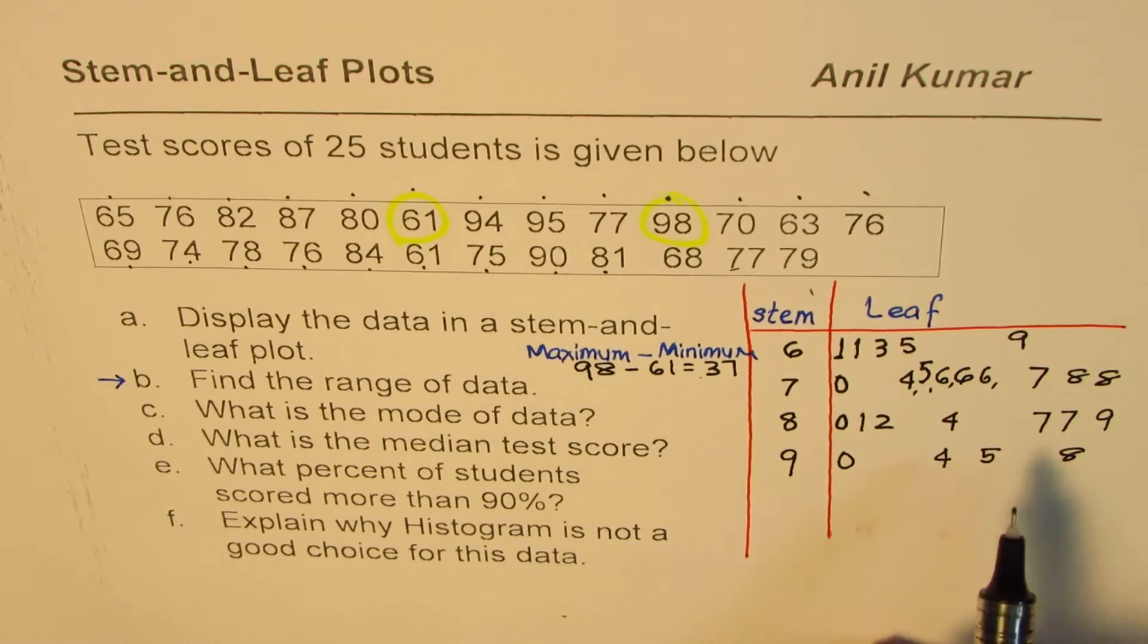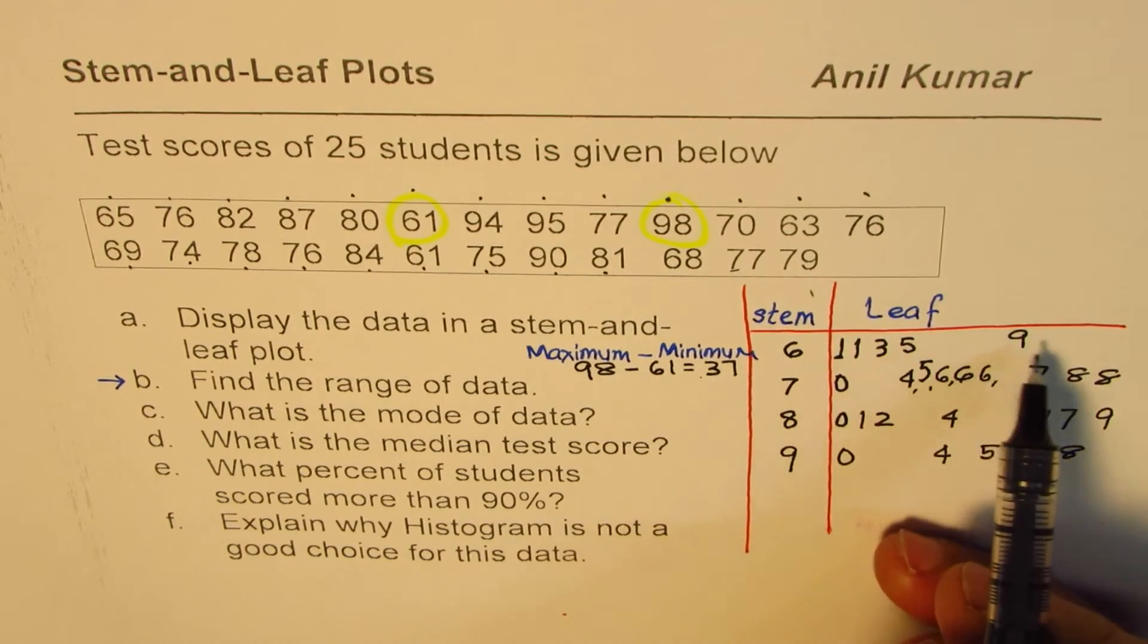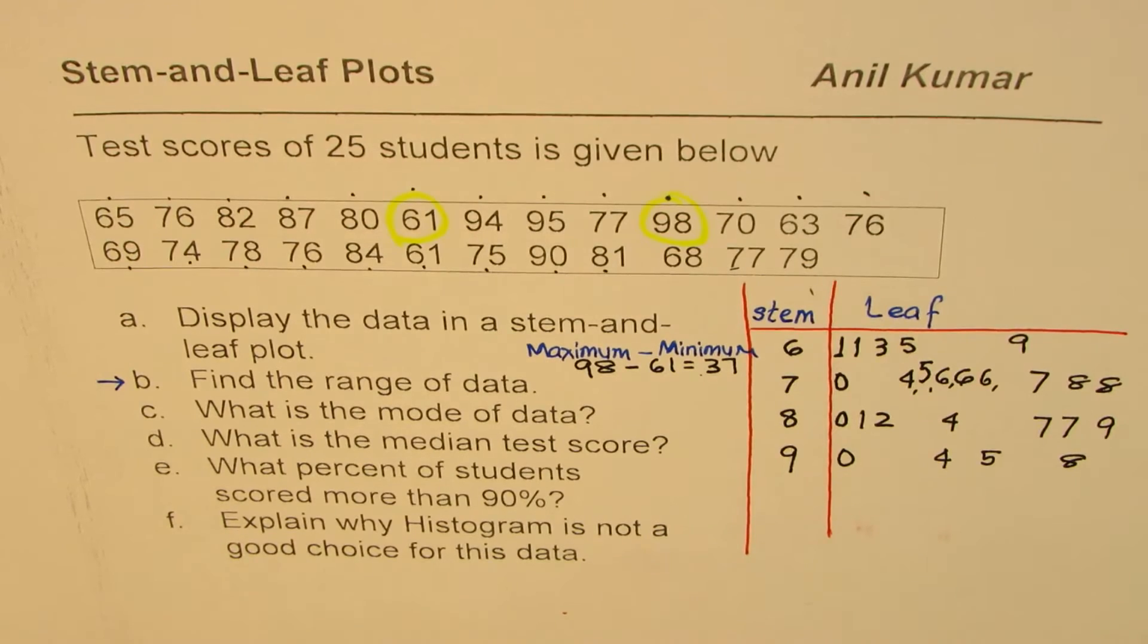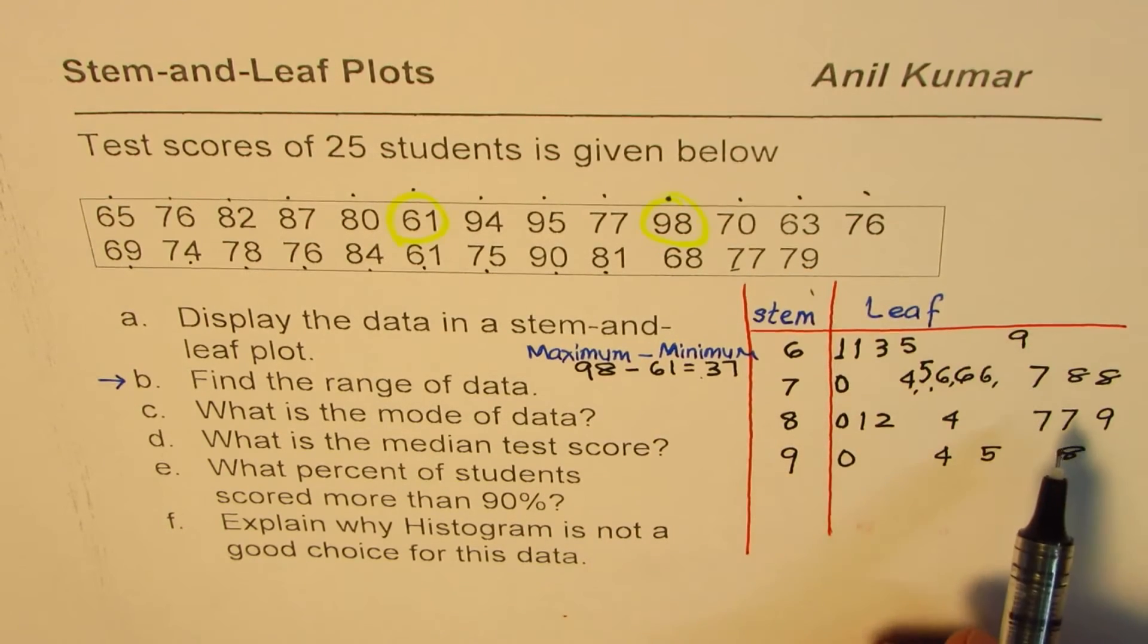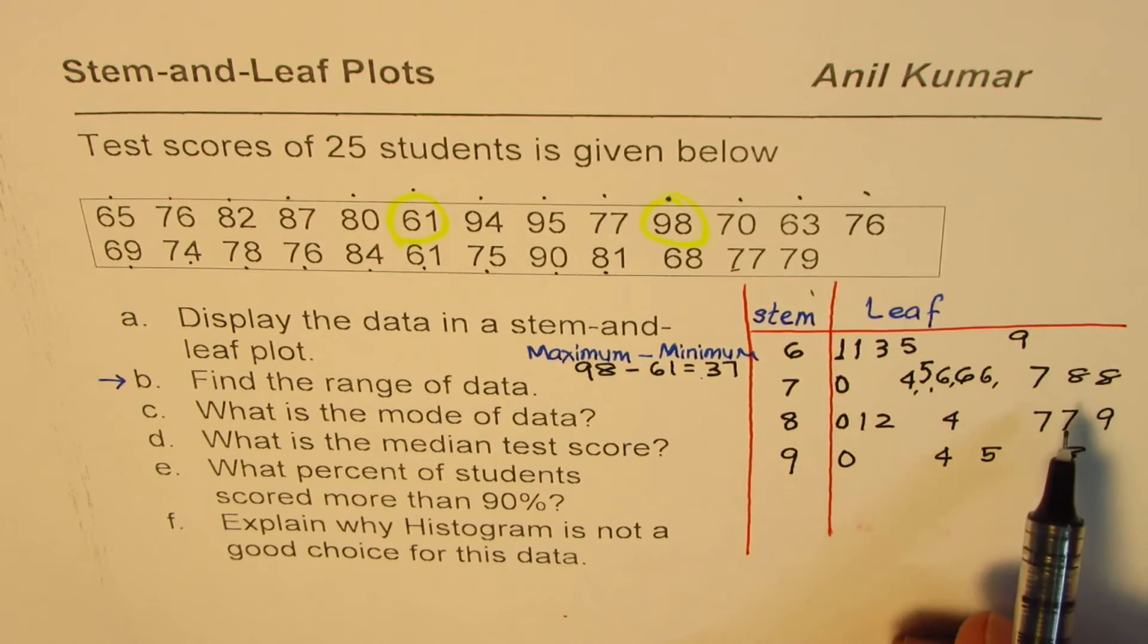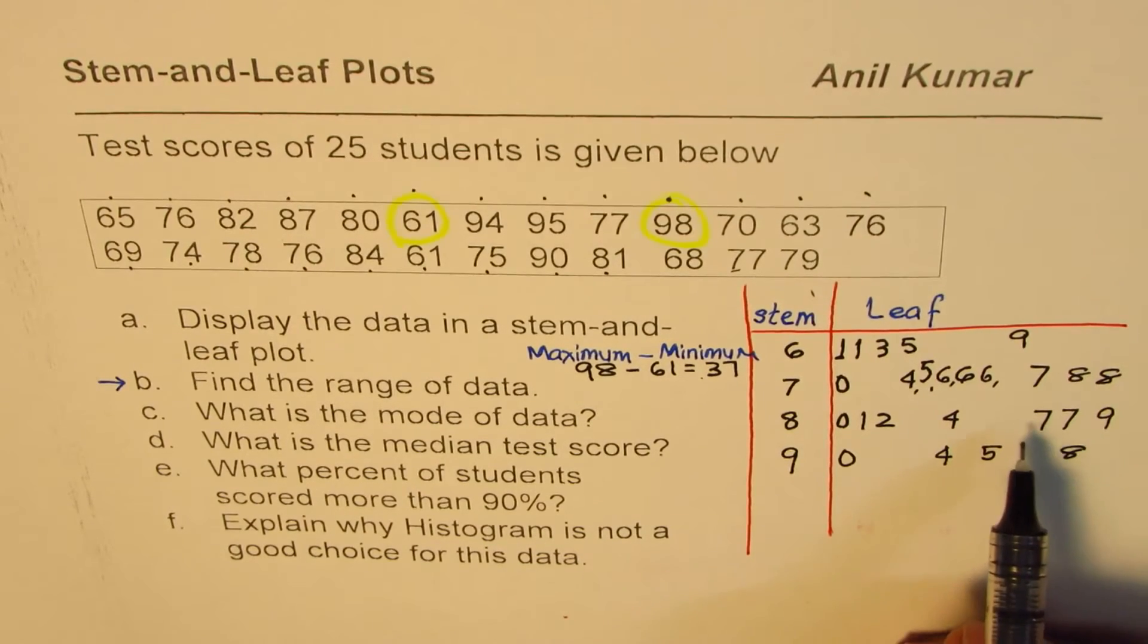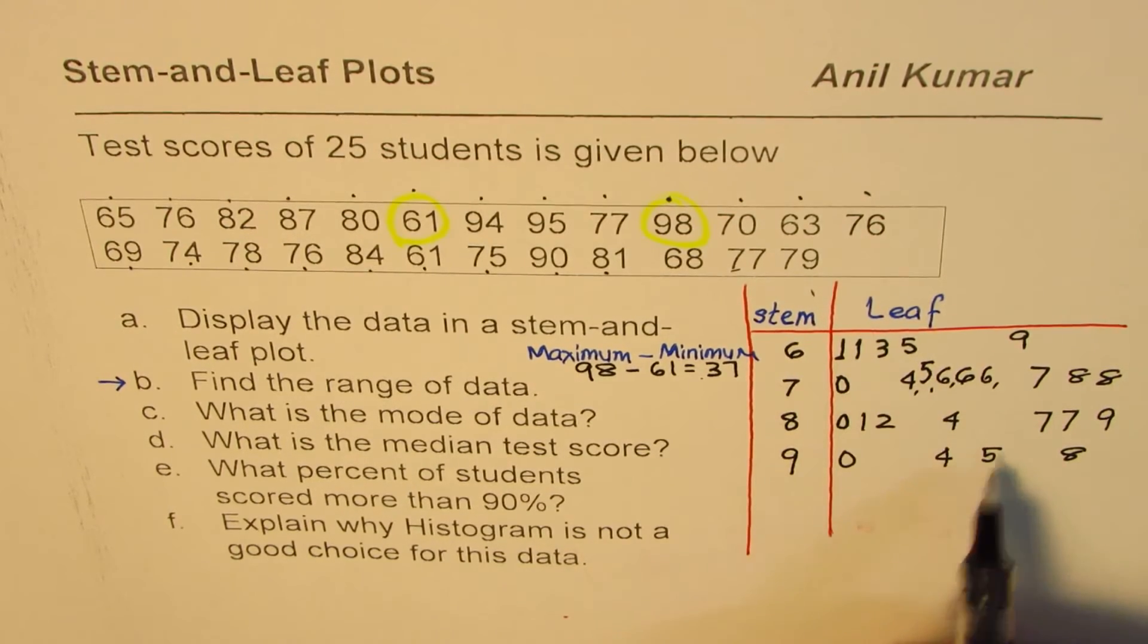We know these are all units. We kind of got them in order, so we don't have to really arrange them again. That is very important. So we have 61, 61, 63, 65, 69, and likewise. We have now created a leaf graph. You can write them slightly better, but I'll work with this data for the time being.